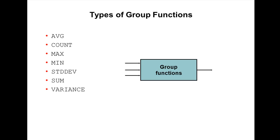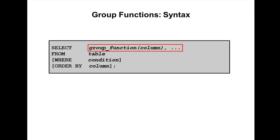The basic syntax of a group function is: SELECT group_function(column_name or expression), column_names FROM table WHERE condition ORDER BY column. Note: all group functions ignore null values. To substitute a value for null values, we have to use NVL, NVL2, or COALESCE functions.